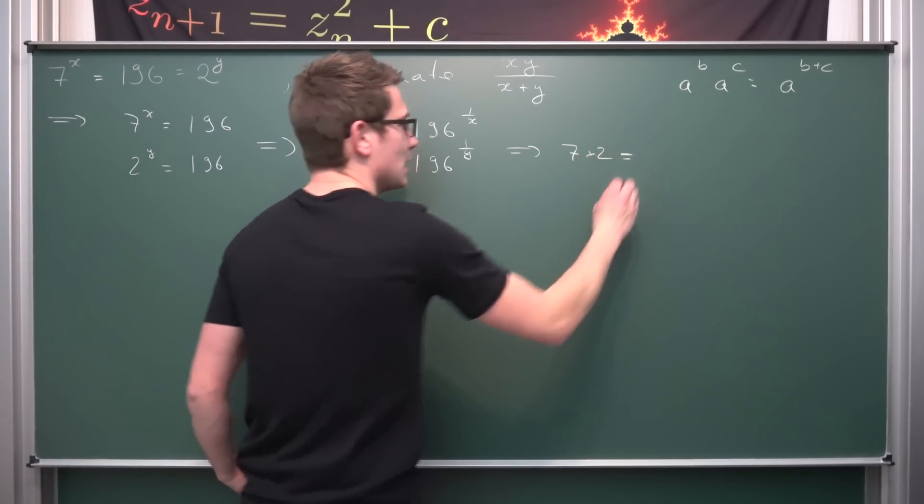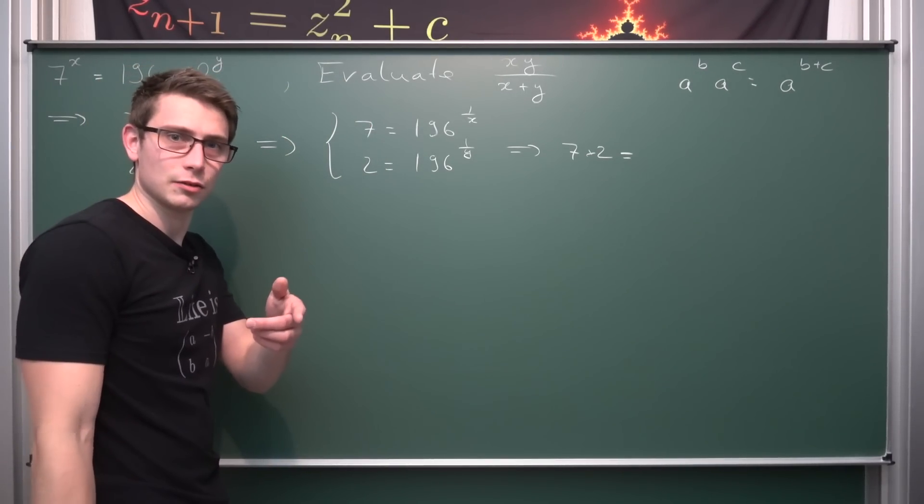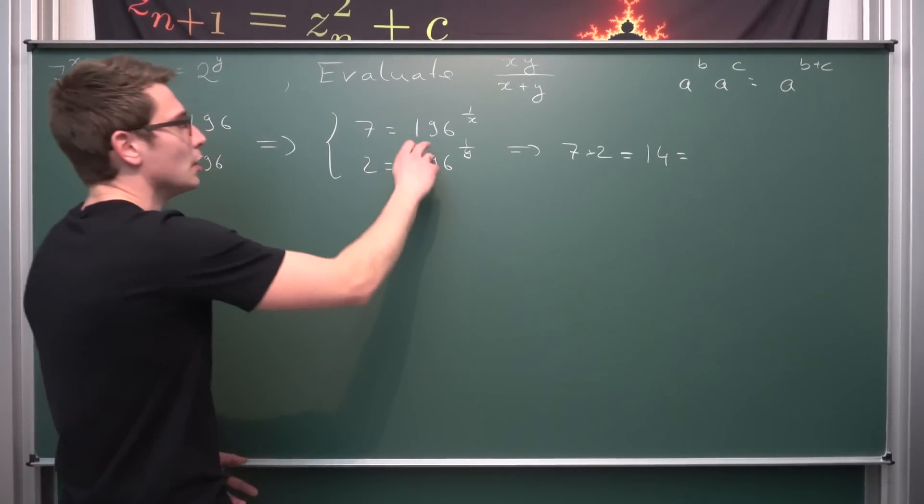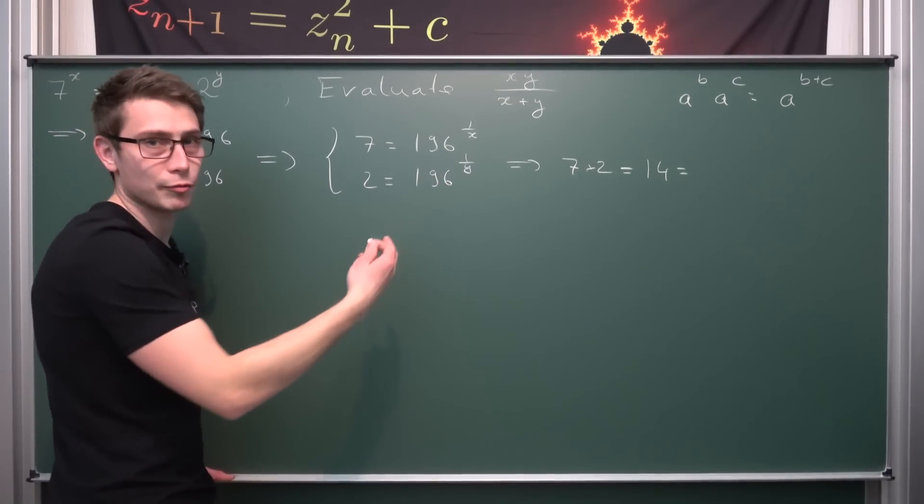So 7 times 2 is the same as, well, that's very hard, successor of 13, obviously. And this is equal to 196 to the 1 over x power times 196 to the 1 over y power.